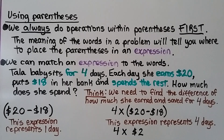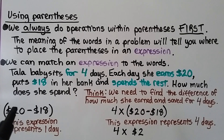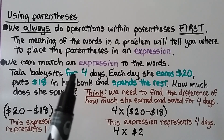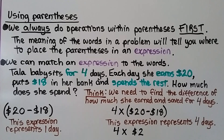We always do operations within parentheses first. The meaning of the words in a problem tells you where to place the parentheses. Tala babysits for 4 days; each day she earns $20, puts $18 in her bank, and spends the rest. We need to find the difference of how much she earned and saved for 1 day: $20 minus $18. Because it's for 4 days, we write 4 times (20 minus 18) in parentheses, because we need to find that first. This expression represents 4 days and equals 4 times $2.